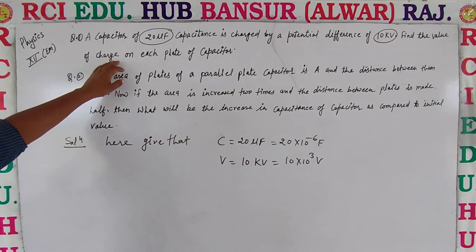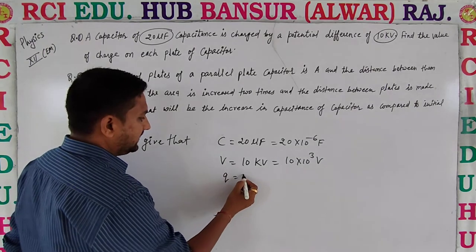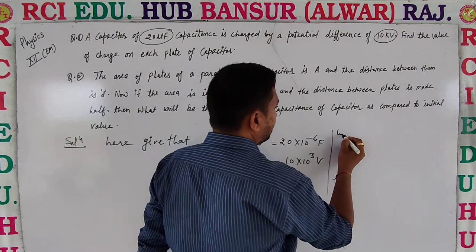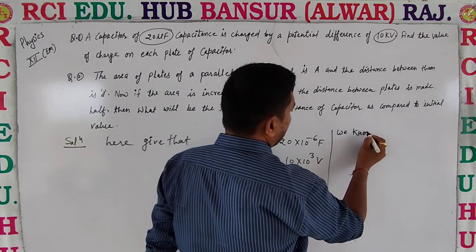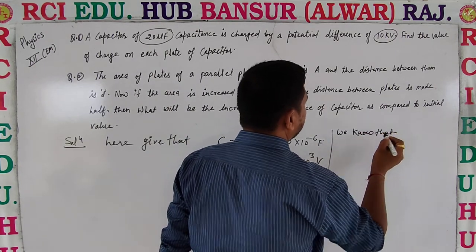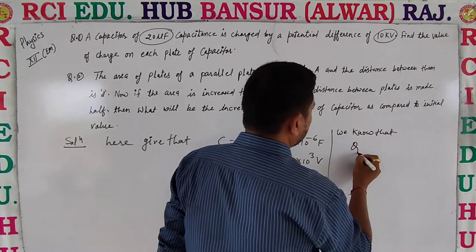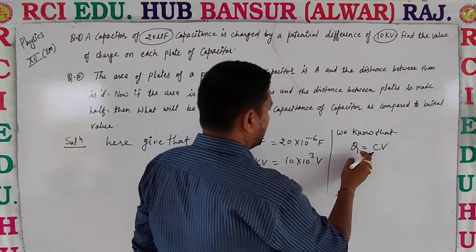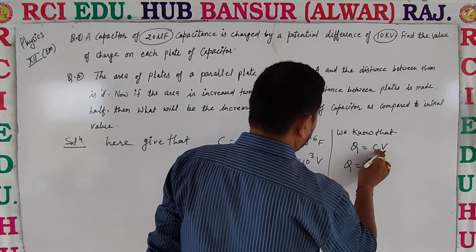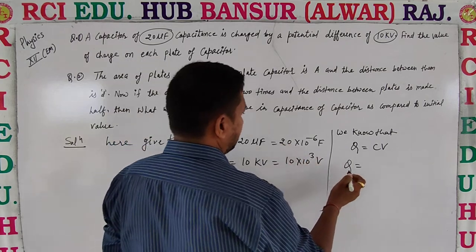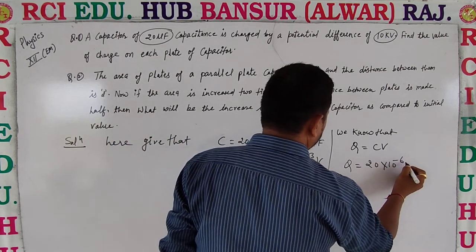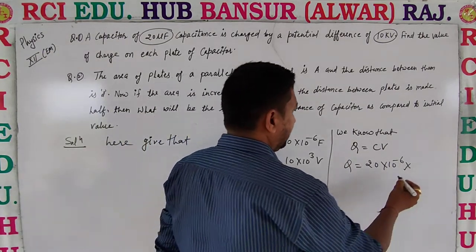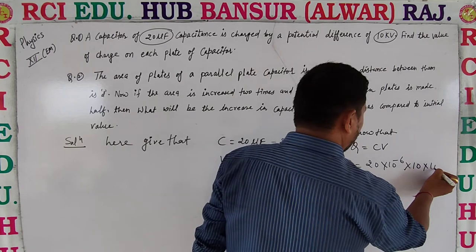We need to find the value of charge. We know that Q is equal to C multiplied by V. C is equal to 20 multiply 10 to the power negative 6, and V is equal to 10 multiply 10 to the power 3.